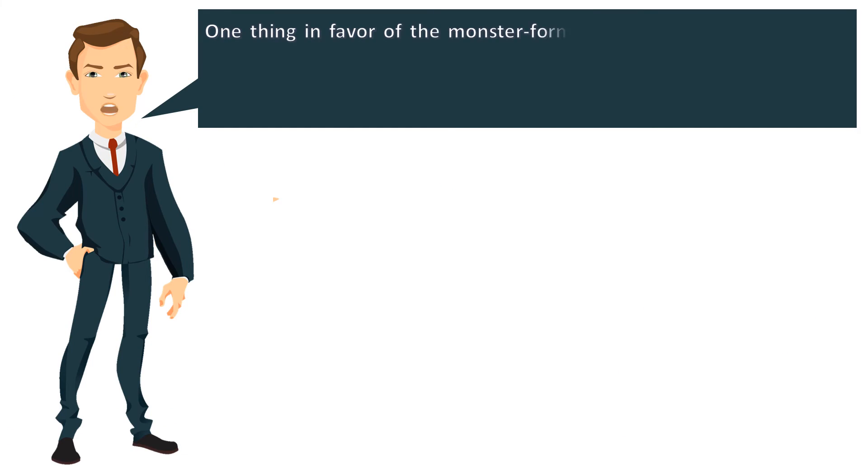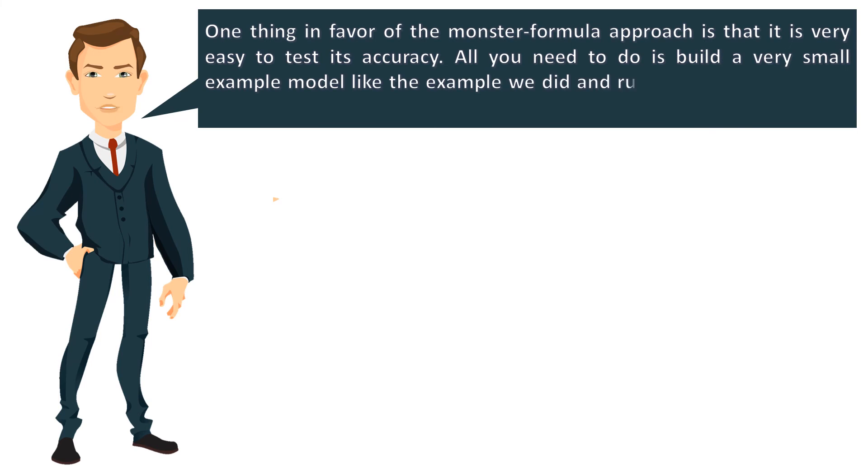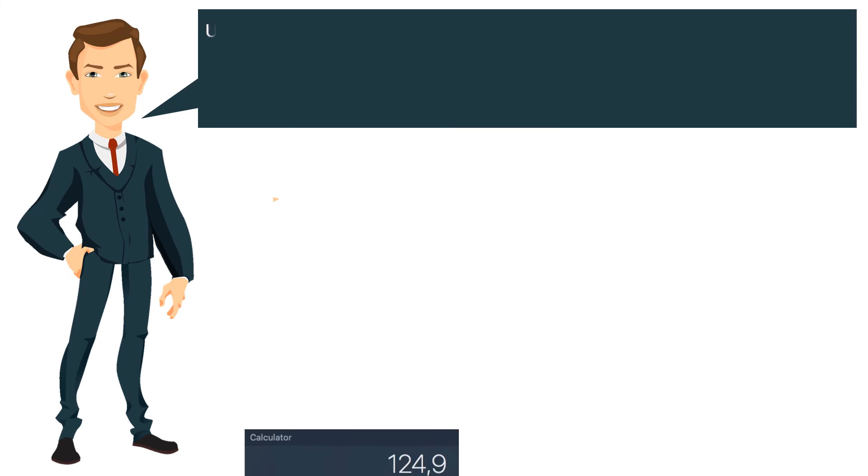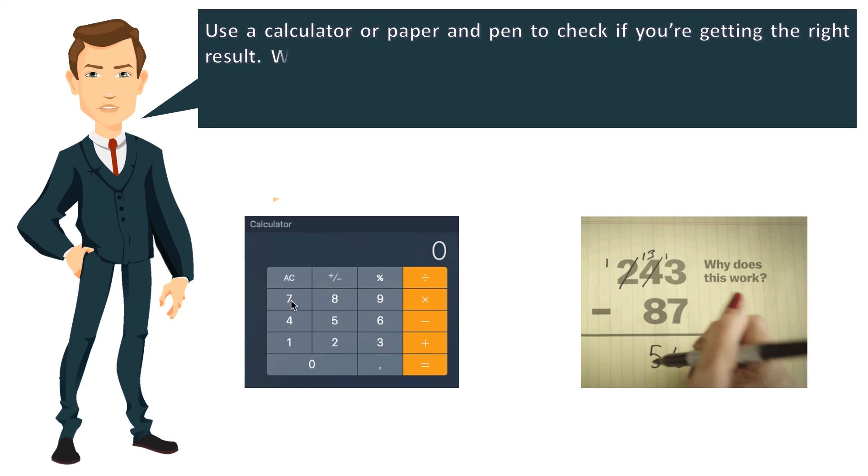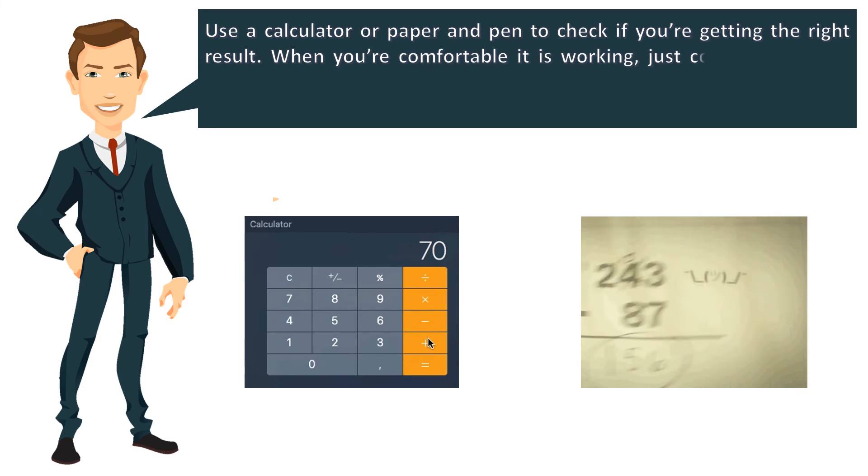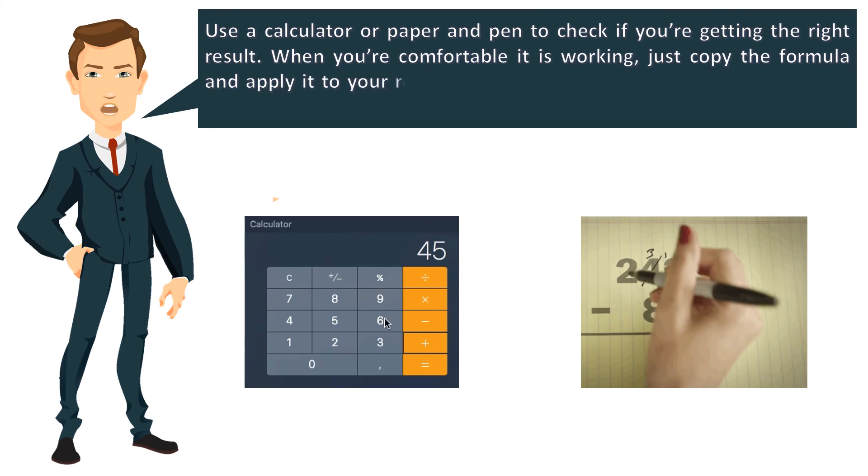One thing in favor of the monster formula approach is that it is very easy to test its accuracy. All you need to do is build a very small example model like the example we did and run different buy and sell scenarios. Use a calculator or paper and pen to check if you're getting the right result. When you're comfortable it is working, just copy the formula and apply it to your real data.